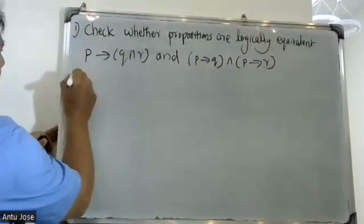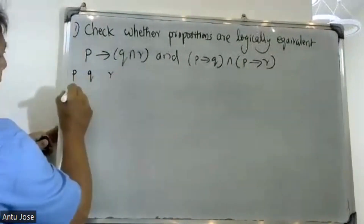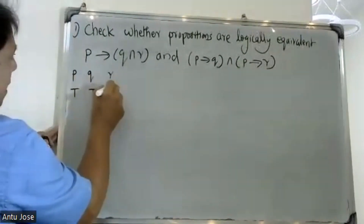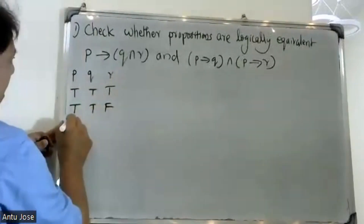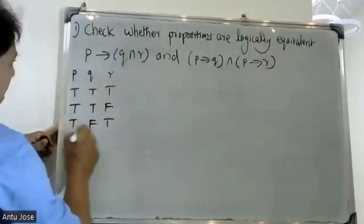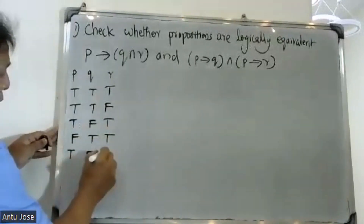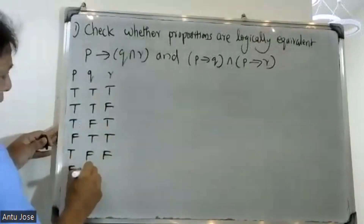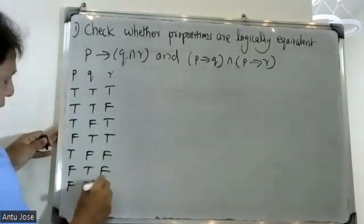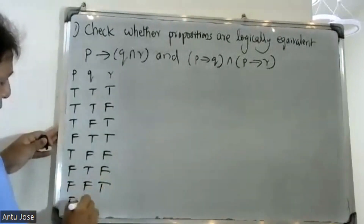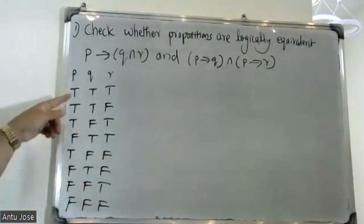The truth table rows will be: T T T, T T F, T F T, T F F, F T T, F T F, F F T, F F F.